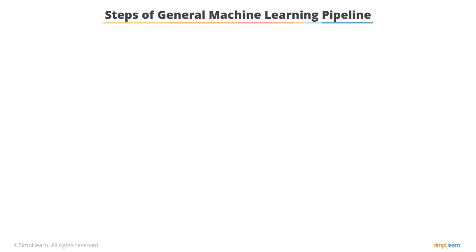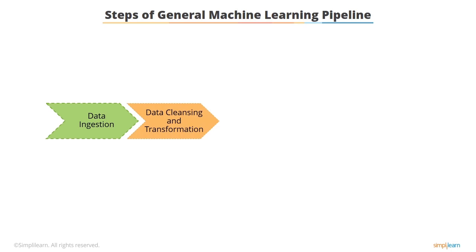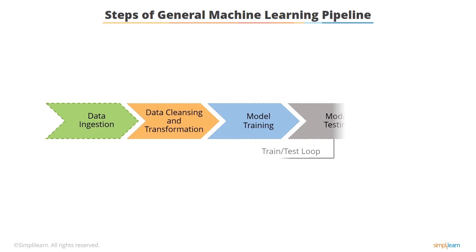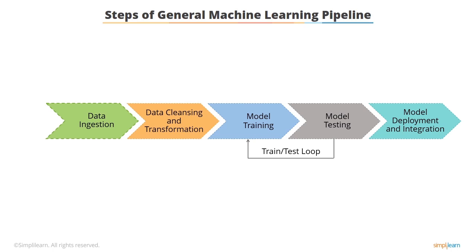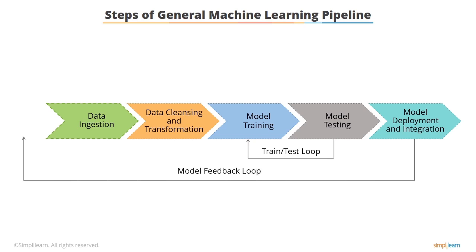Here are the steps included in the general machine learning pipeline. The first step is data ingestion. When a user ingests data, it may not be in the correct form and may require cleaning up and transformation, which is the second step. This data is then input for the machine learning algorithm. In the third step, the data goes through model training. The next step is the model testing phase. In the final step, the model is deployed and integrated. The model feedback then goes back to the users and reflects in user behavior during data ingestion.